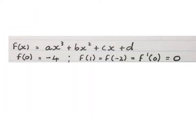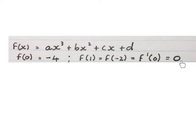The second problem gives us the formula again, and the information is written in function notation. What this is saying: if x is 0 the y value will be minus 4; if x is 1 the y will be 0; if x is minus 2 the y will be 0; and where x is 0 the gradient is 0. All written in one sentence.